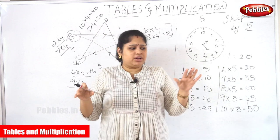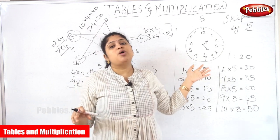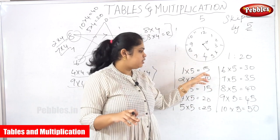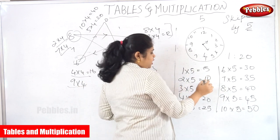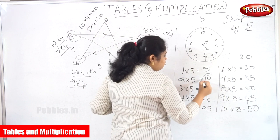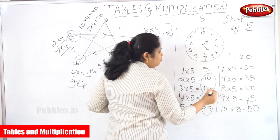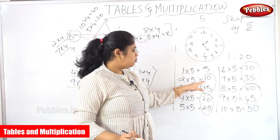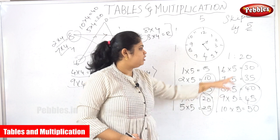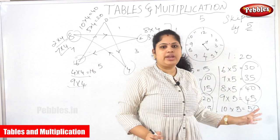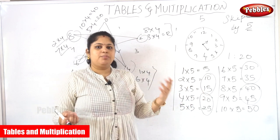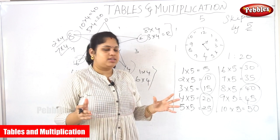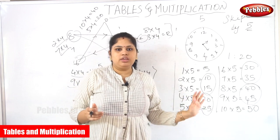Skip count by 5 is very simple compared to skip count by 4. We start with 5, then 10. The pattern is that the ones digit alternates between 5 and 0: 1-5, 2-0, 2-5, 3-0, 3-5, 4-0, 4-5, and so on. This is the simplest skip count method — no difficult technique needed. It will be very easy to learn the 5 tables.